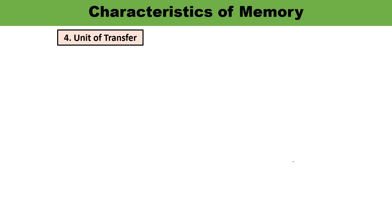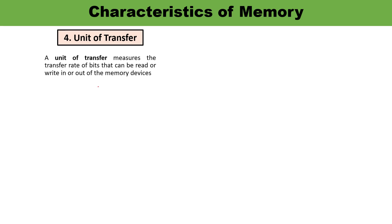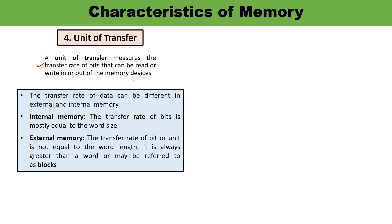The next characteristic is unit of transfer. From the name itself, it measures the transfer rate of bits that can be read or written into or out from the memory device — at what rate data can be transferred into or taken out from the memory. The data transfer rate can be different for internal and external memory. For internal memory, the transfer rate is mostly equal to the word size, whereas for external memory it is not always equal to the word length — it is always greater than a word, or may be referred to as a block.